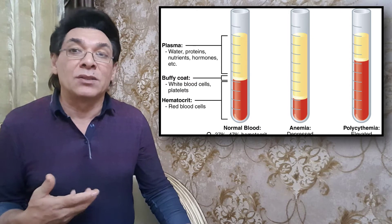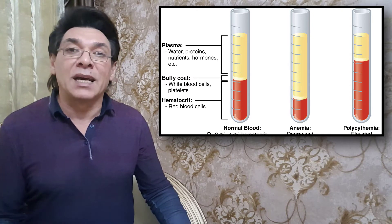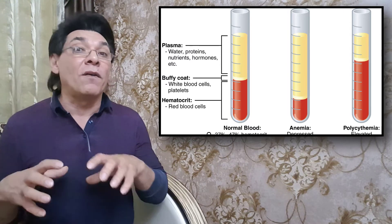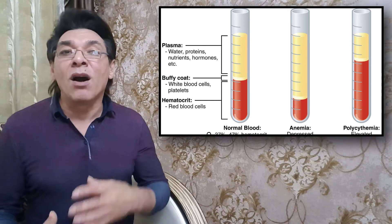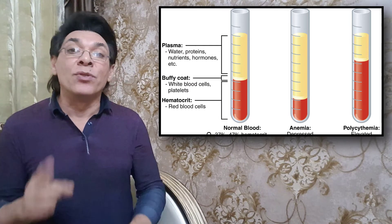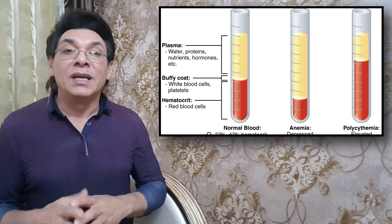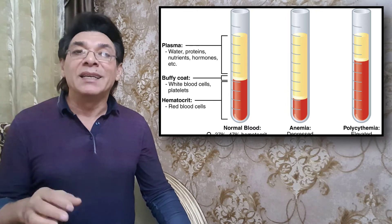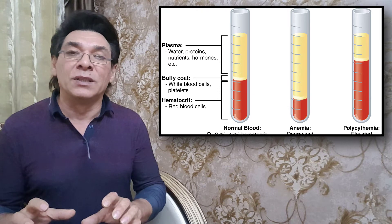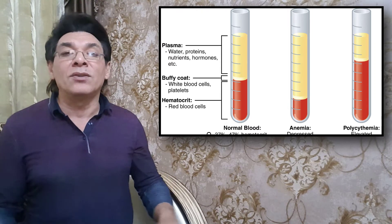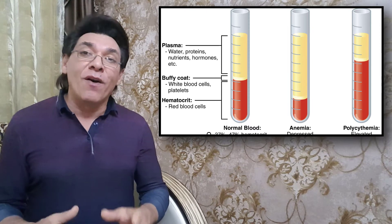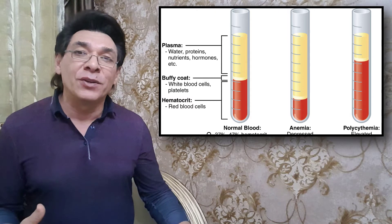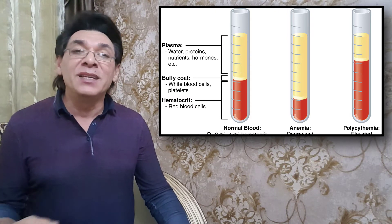Platelets, also called thrombocytes, form this layer referred to as the Buffy coat because of its color. It normally constitutes less than 1% of a blood sample. Above the Buffy coat is the blood plasma, normally a pale straw-colored fluid, which constitutes the remainder of the sample. The volume of erythrocytes after centrifugation is also commonly referred to as packed cell volume, or PCV.